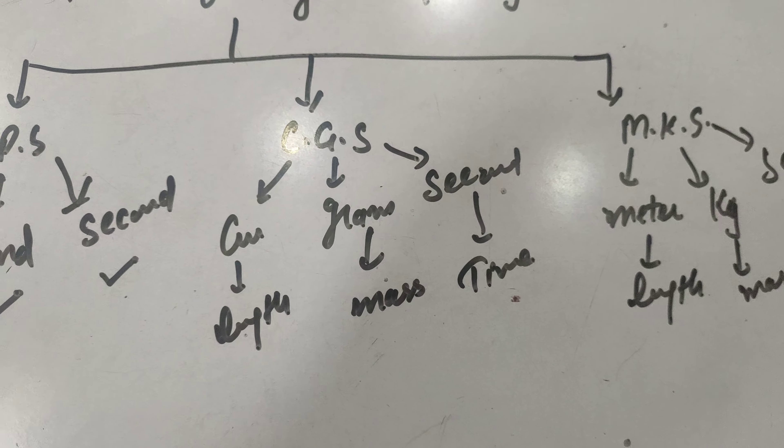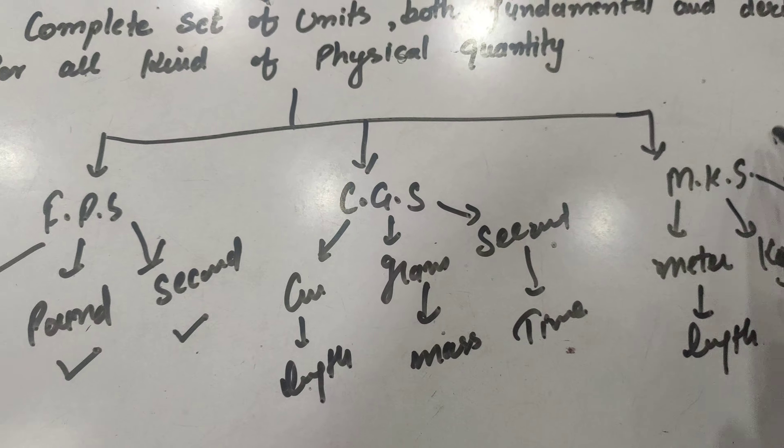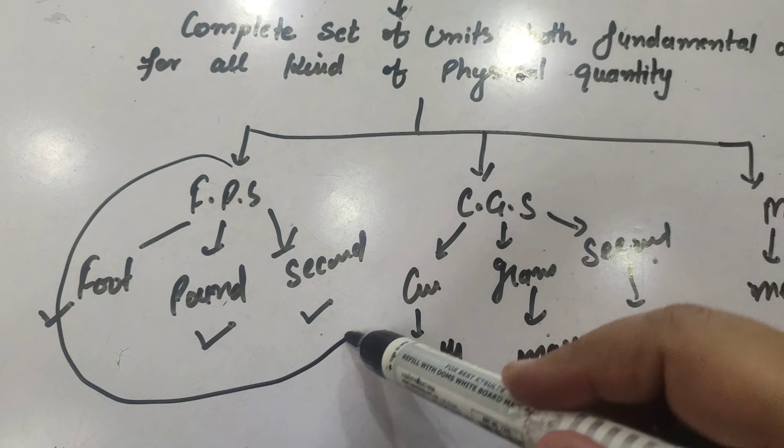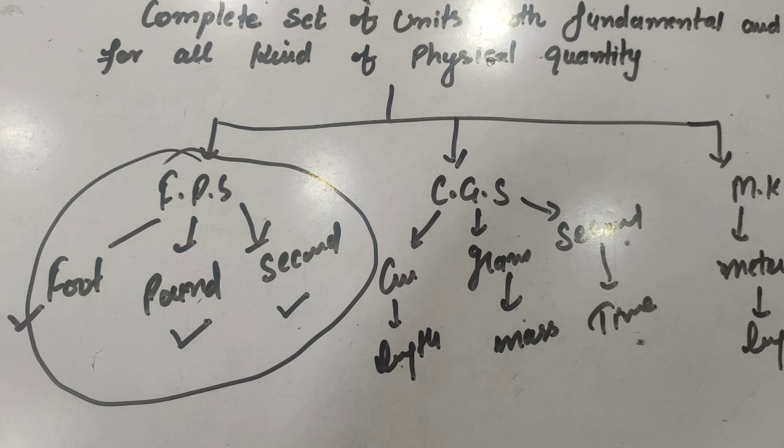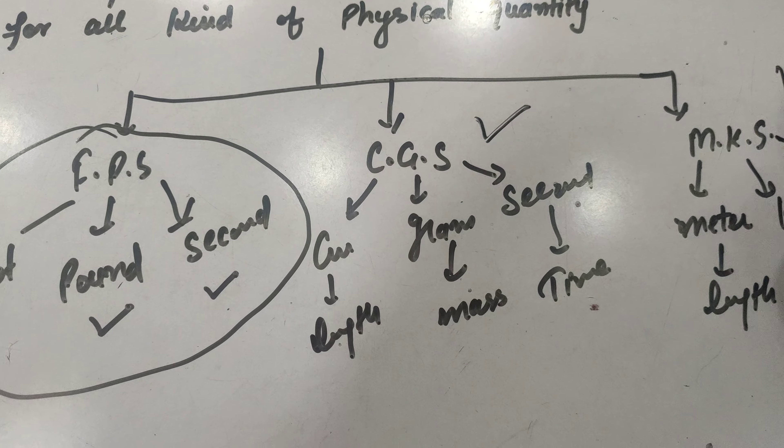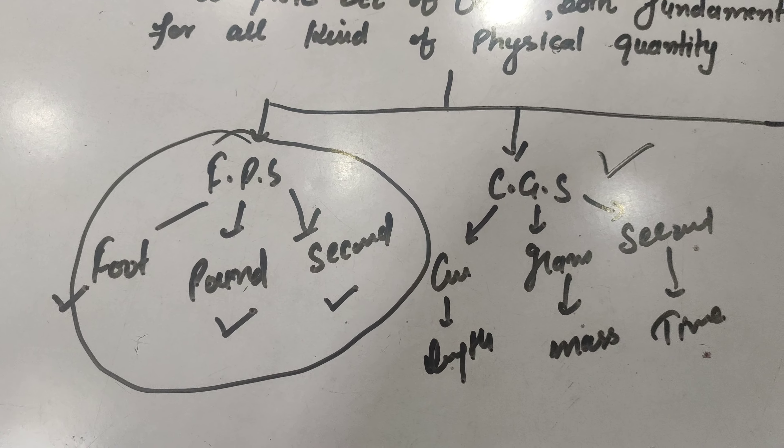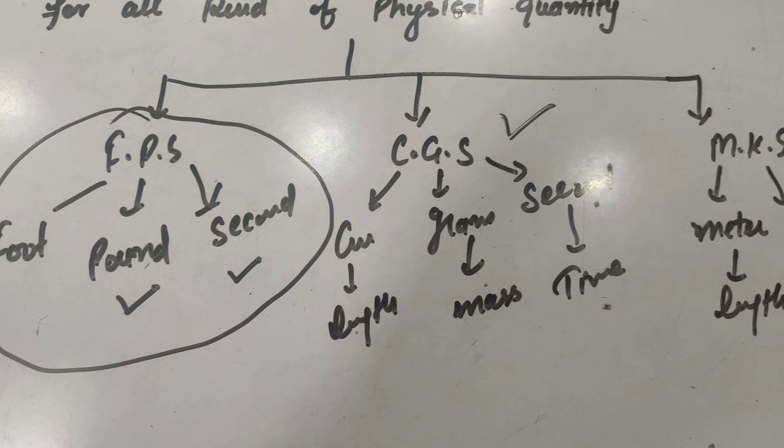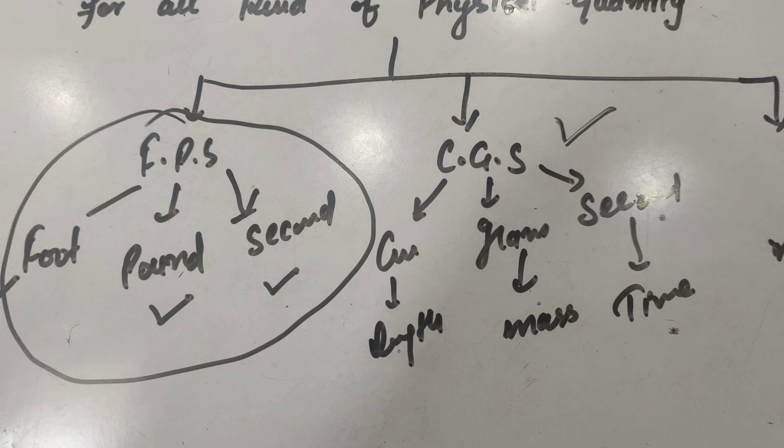So these are the basic three systems of units: FPS, CGS, and MKS. FPS is not any more used because of inconvenient size and dimensions, but the most commonly used are CGS and MKS. Now we will discuss about the drawbacks and merits of MKS over CGS and drawbacks of CGS system in the next slide.